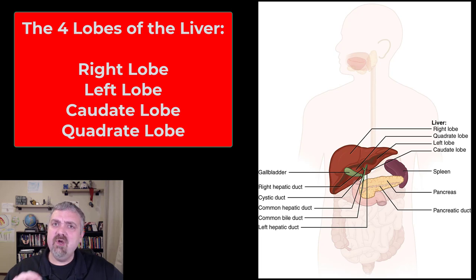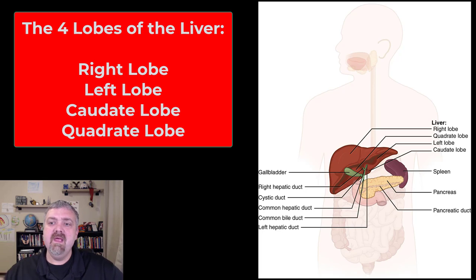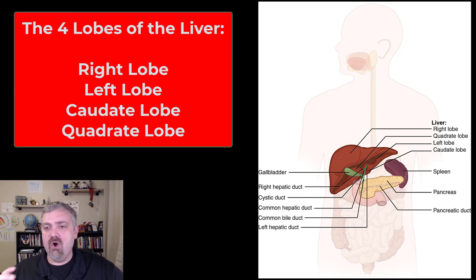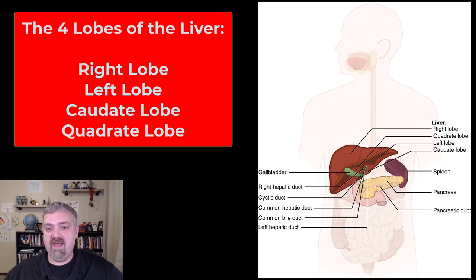Some people would say it only has two lobes, but we're going to say it has four. It has a really large right lobe and then a smaller left lobe, but on the back you do have what are called the caudate and quadrate lobes. So the liver does have four lobes, though there's some argument about that. The right lobe is the biggest part.